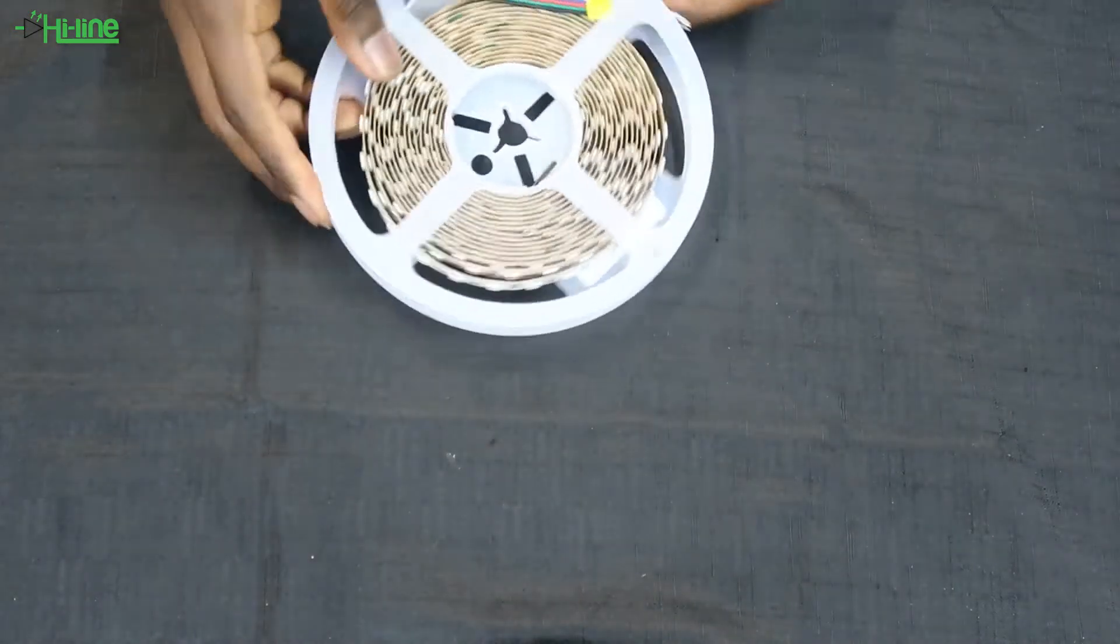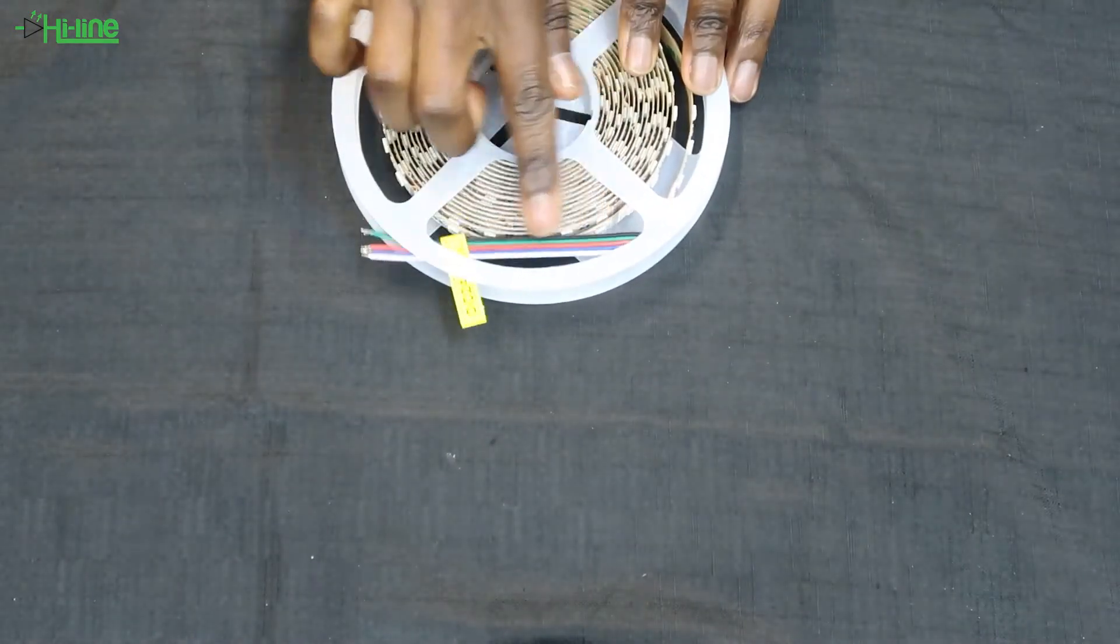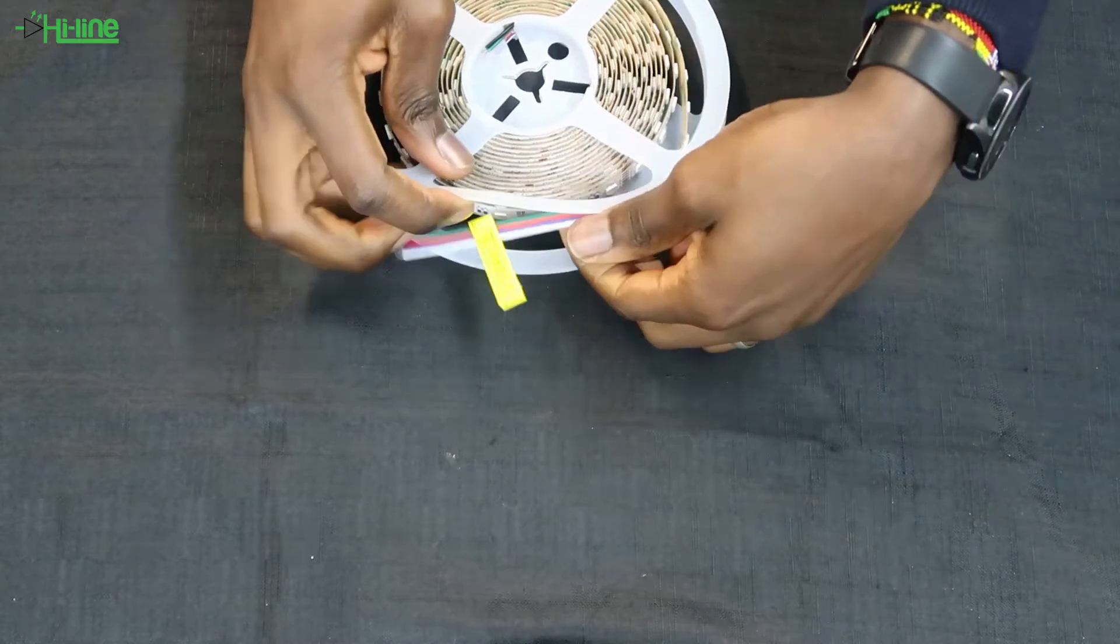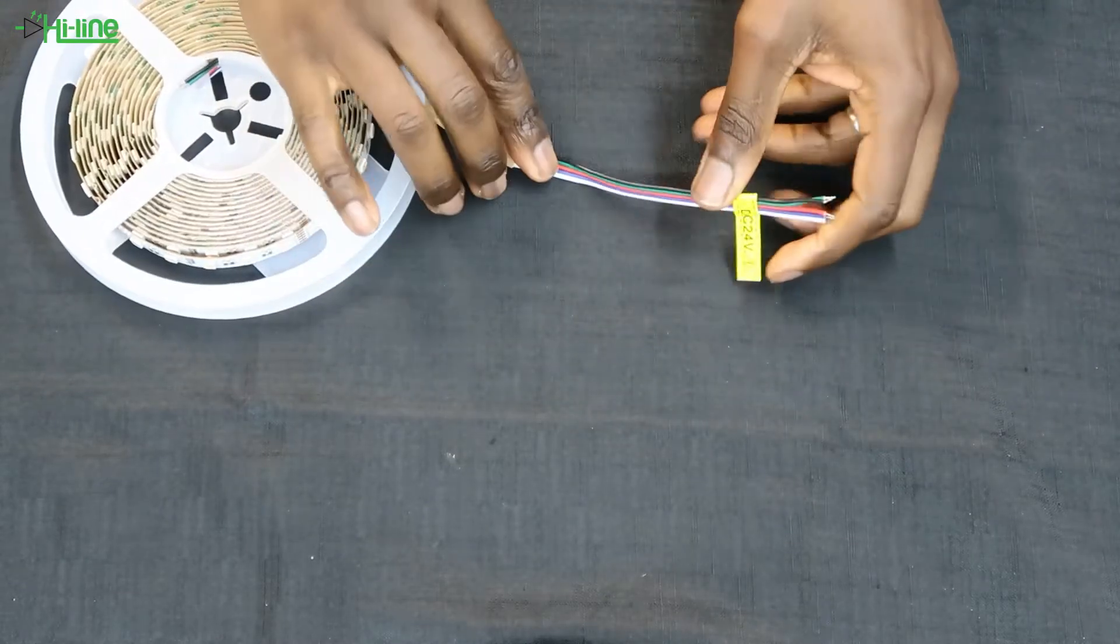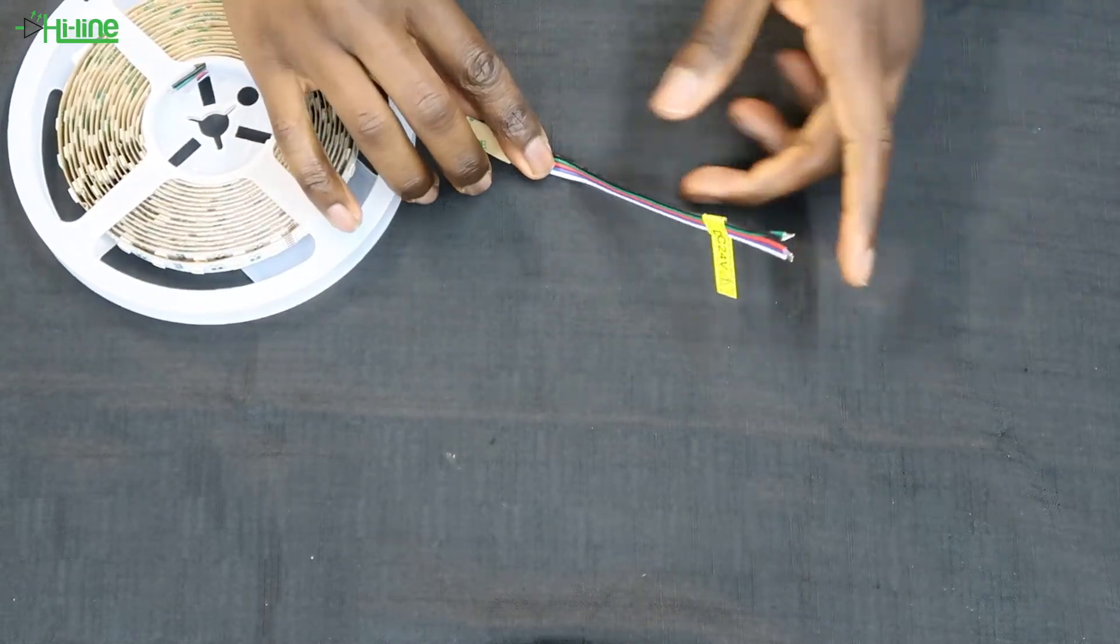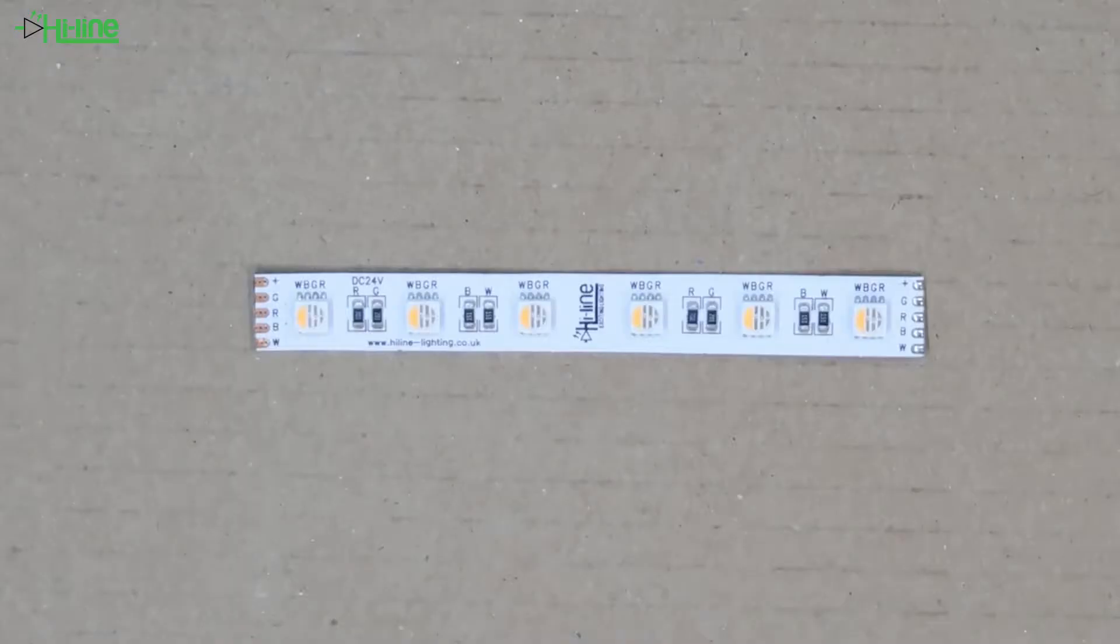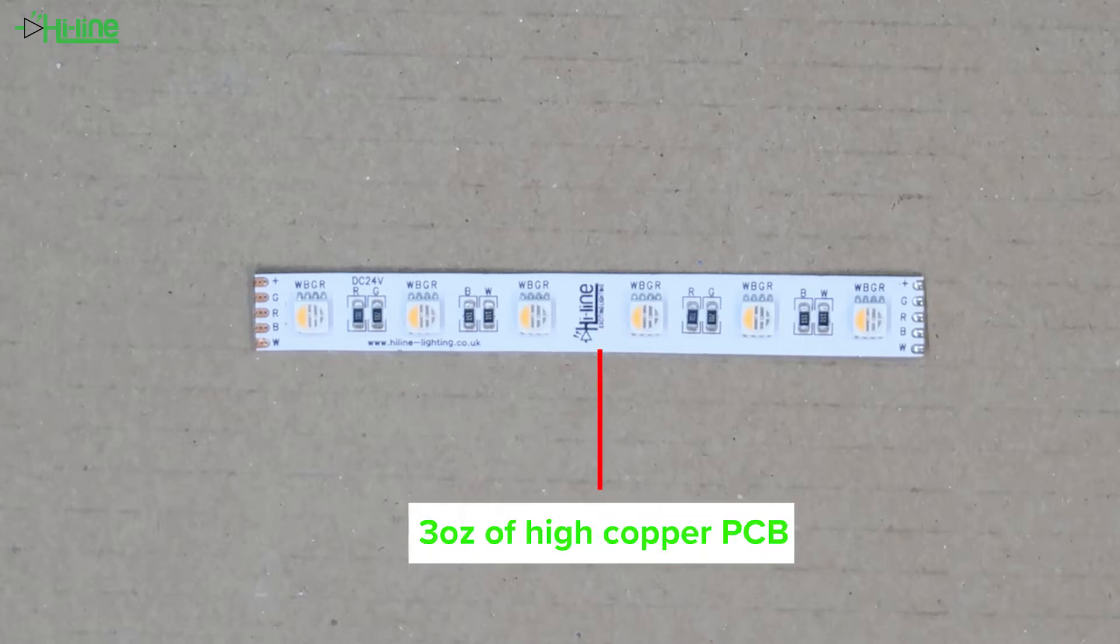The strip has a five wire cable at the end of each side with a length of 15 centimeters. What's so good about this LED strip? It has a 12 millimeter width and is powered by a 3 ounce high copper flexible PCB which makes it possible to maintain a cooler operating temperature despite the very high brightness.